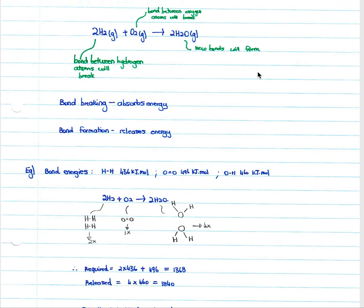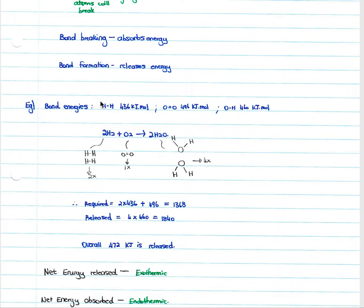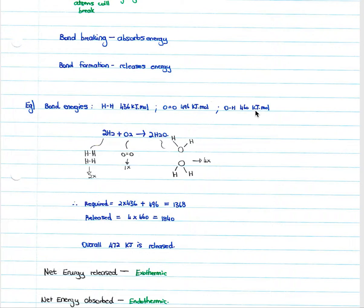For this same chemical equation — 2H₂ + O₂ → 2H₂O — you will be given bond energy information such as: the H–H bond has 436 kJ/mol, the O=O bond has 496 kJ/mol, and the O–H bond has 460 kJ/mol.